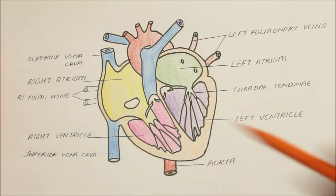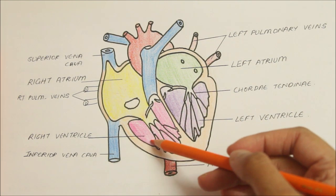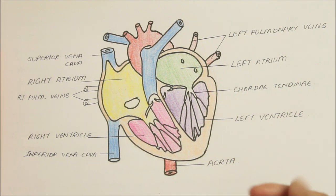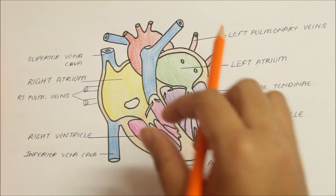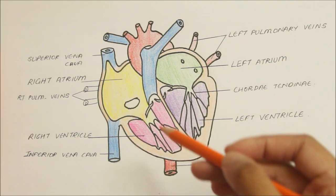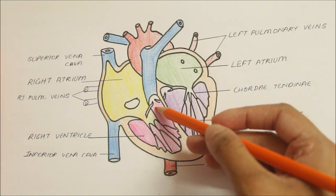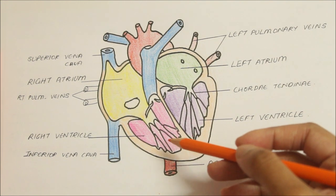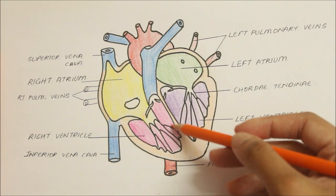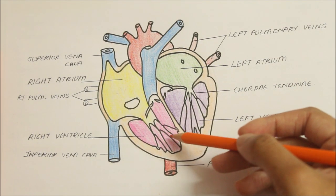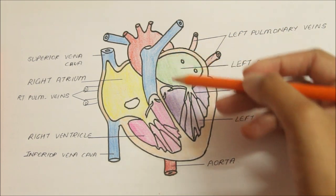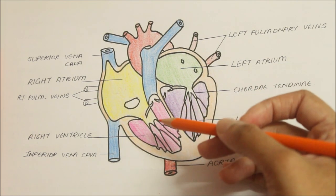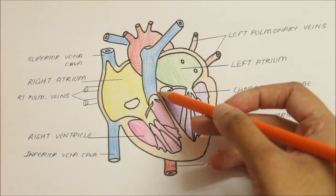Now let's look at the external features of the right ventricle. Externally, the right ventricle has two surfaces: the anterior or the sternocostal surface, and the inferior or the diaphragmatic surface. Interiorly, it has two parts: an inflowing part and an outflowing part. The inflowing part is rough due to the presence of muscular ridges called trabeculae carnie. The outflowing part, the infundibulum, is smooth and forms the upper conical part of the right ventricle, which gives rise to the pulmonary trunk. The two parts are separated by a muscular ridge called the supraventricular crest, situated between the tricuspid valve and the pulmonary orifice.